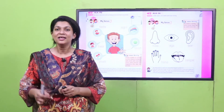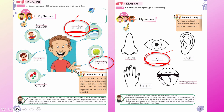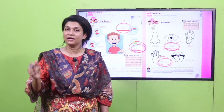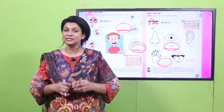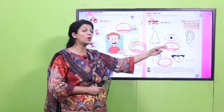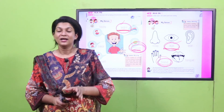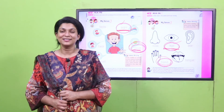Ab hai aapka writing time. Writing time mein aapne kya karna hai? Dekhte hain hum board pe. Aapne sabse pehle 'sight' likhna hai, aur sight ke baad 'eye' likhenge — kyunke hum dekhte hain aanch se, sight is connected with eye. And then you're going to write 'touch,' and what do you need to touch something? You need 'hand.' So you just have to write four words: sight, eye, touch, and hand. Dear teacher, pause the video and let them complete.